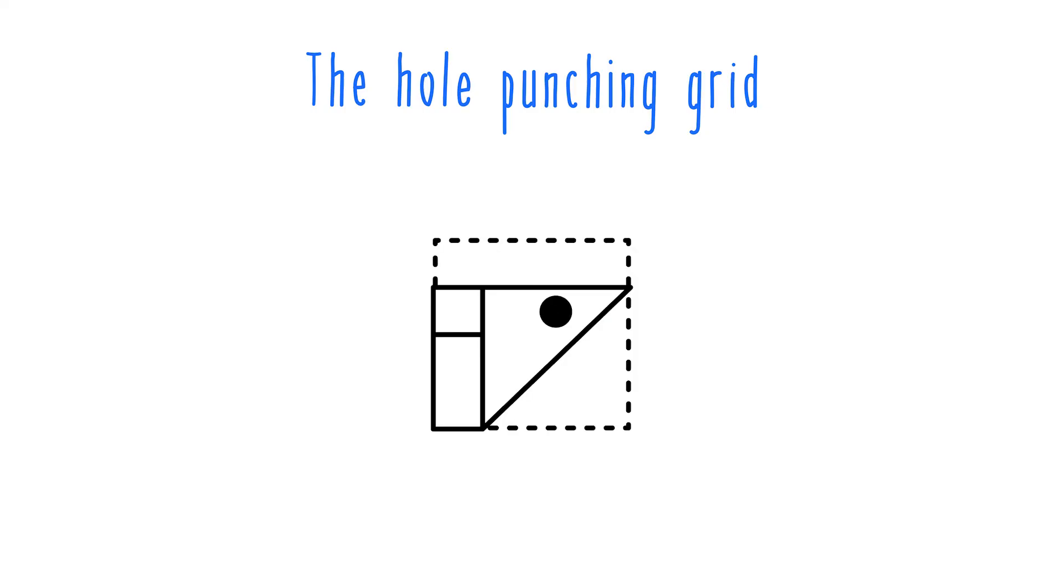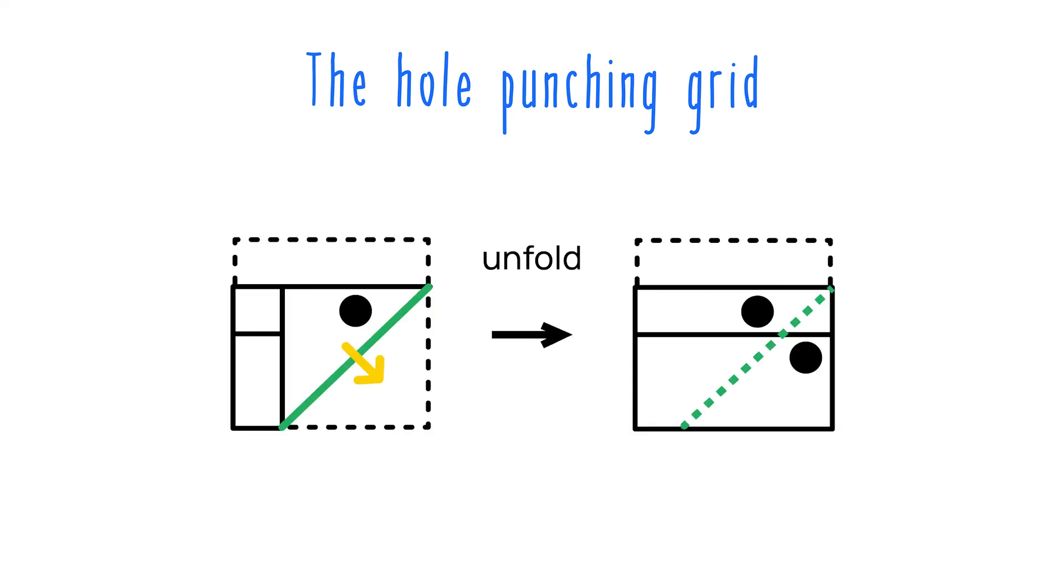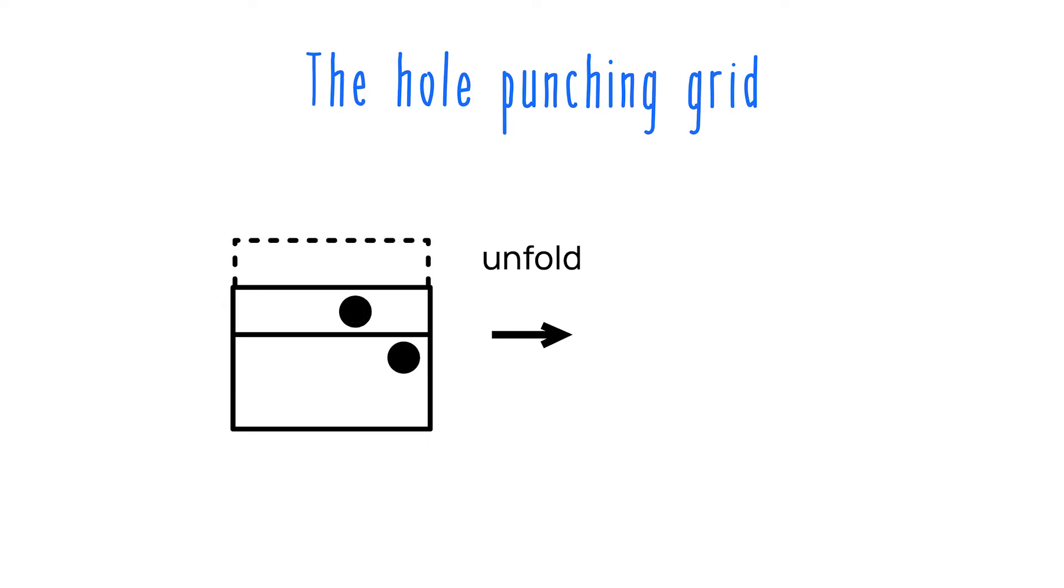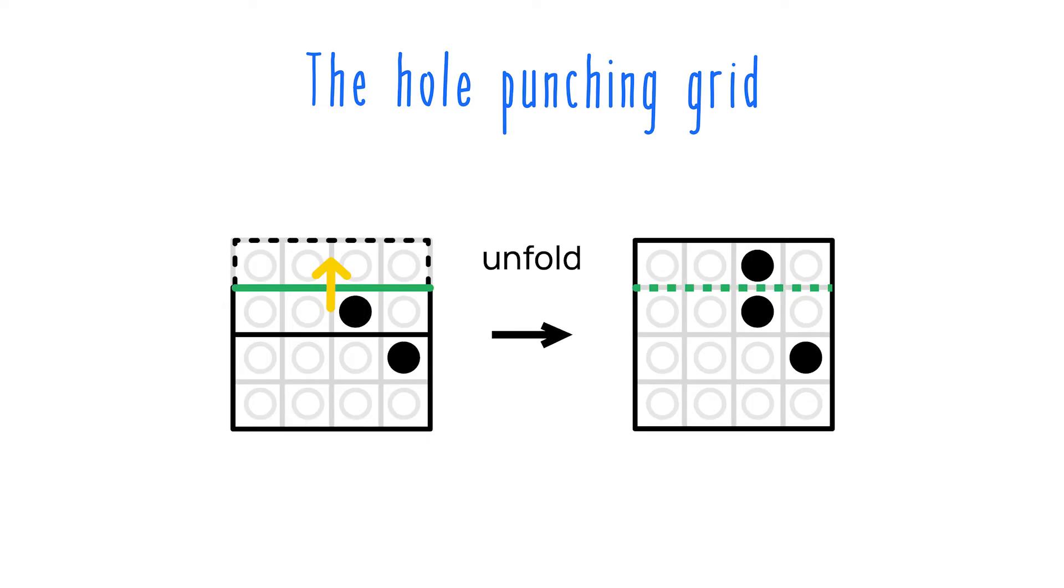For instance, for a problem like this, the first unfold would put the hole here on the grid on the opposite side of the fold axis. Then you'd have this hole reflected up here. Of course, these folds can get a lot more complicated. So we'll get more in depth on how to track holes across different types of folds with more complicated examples in our next video.